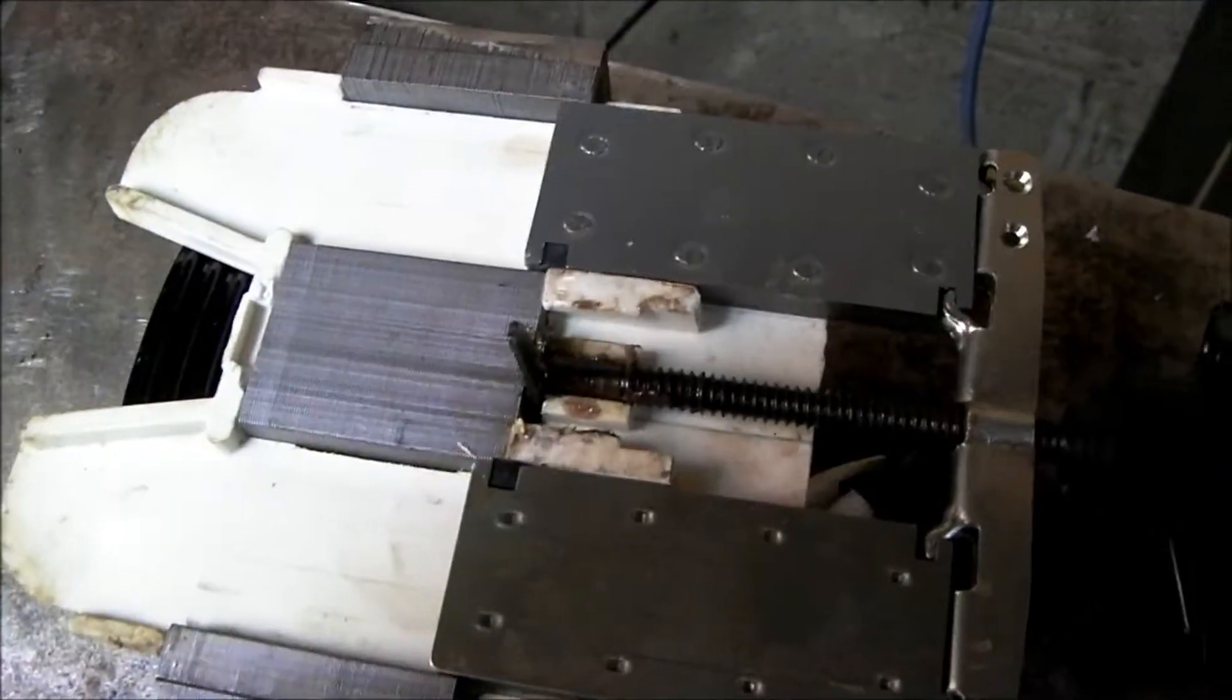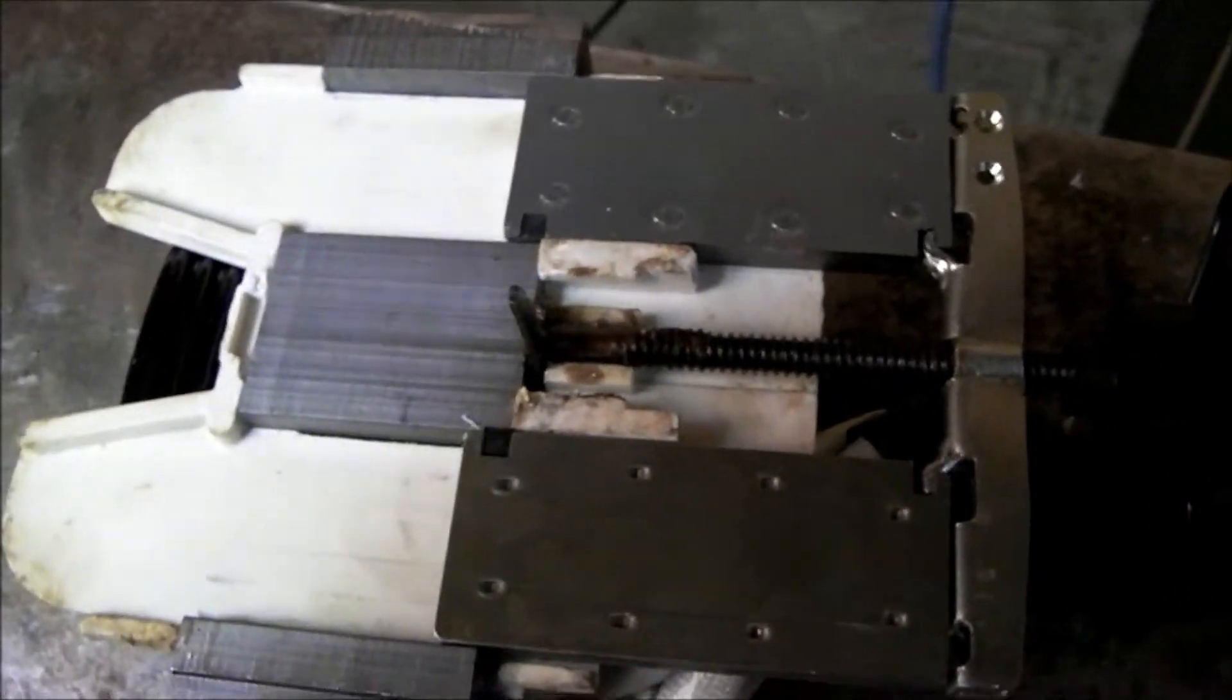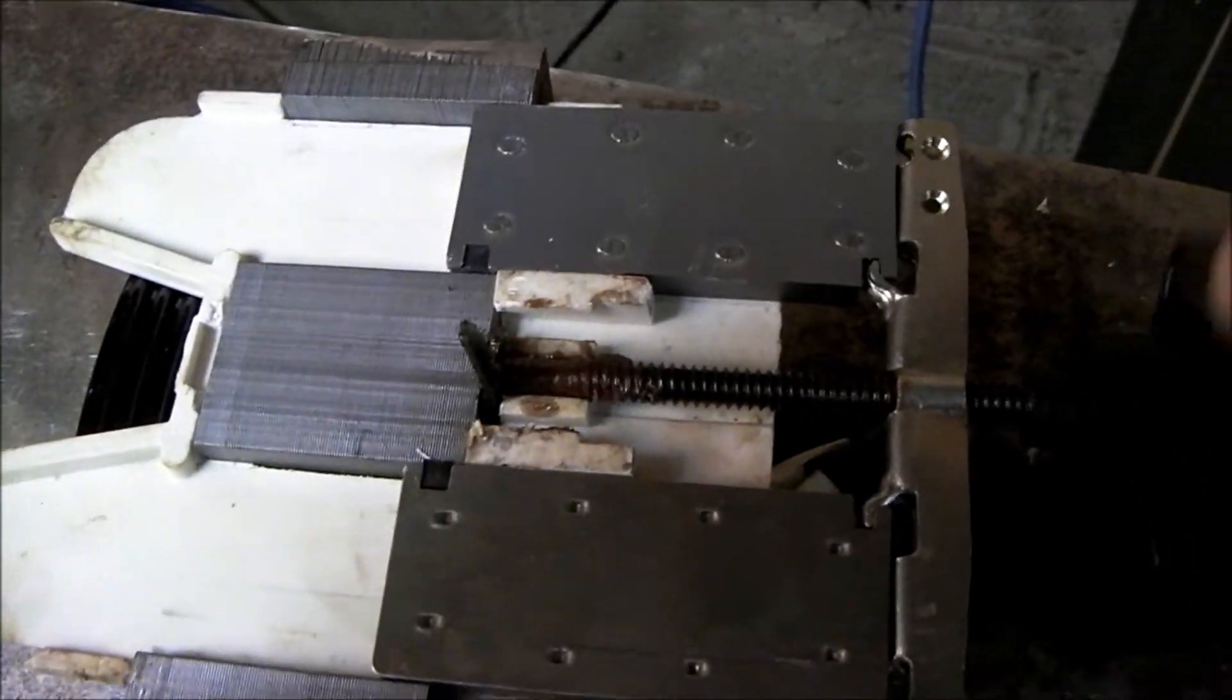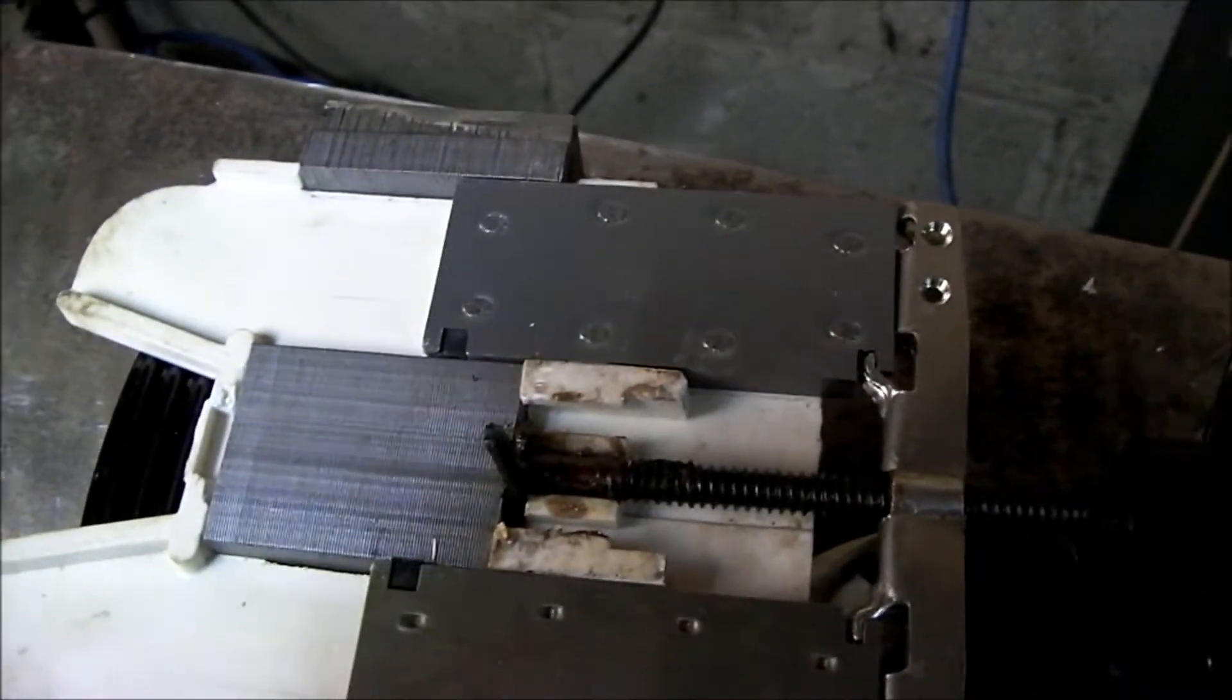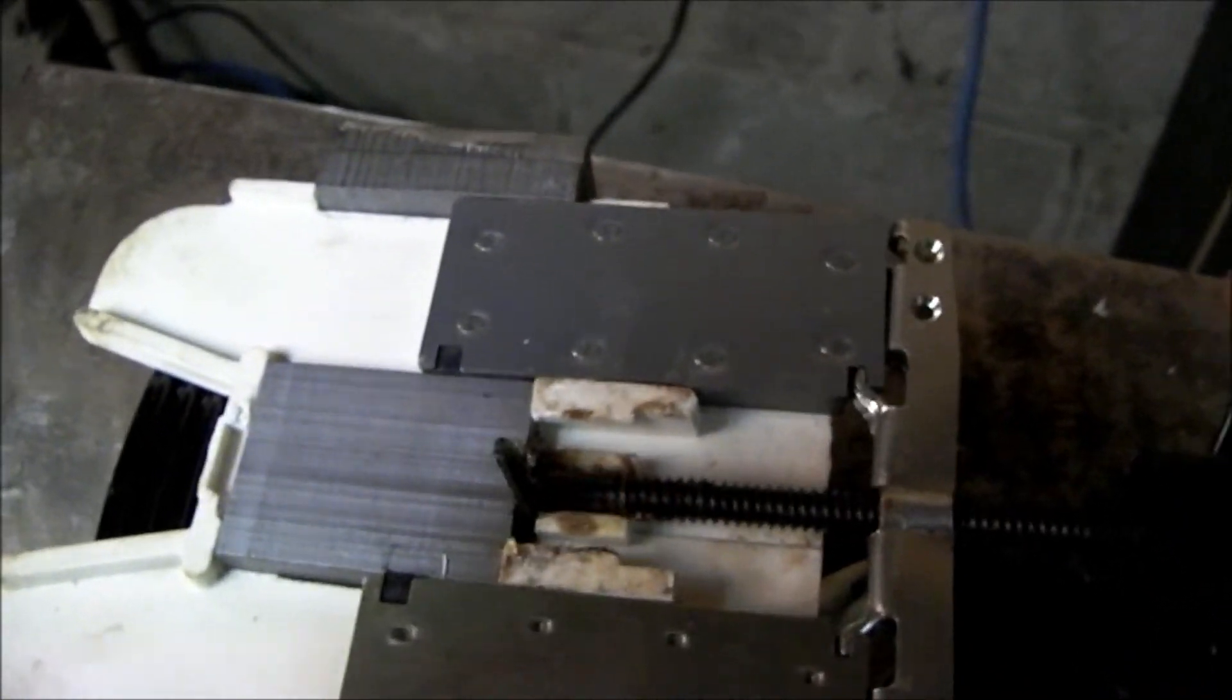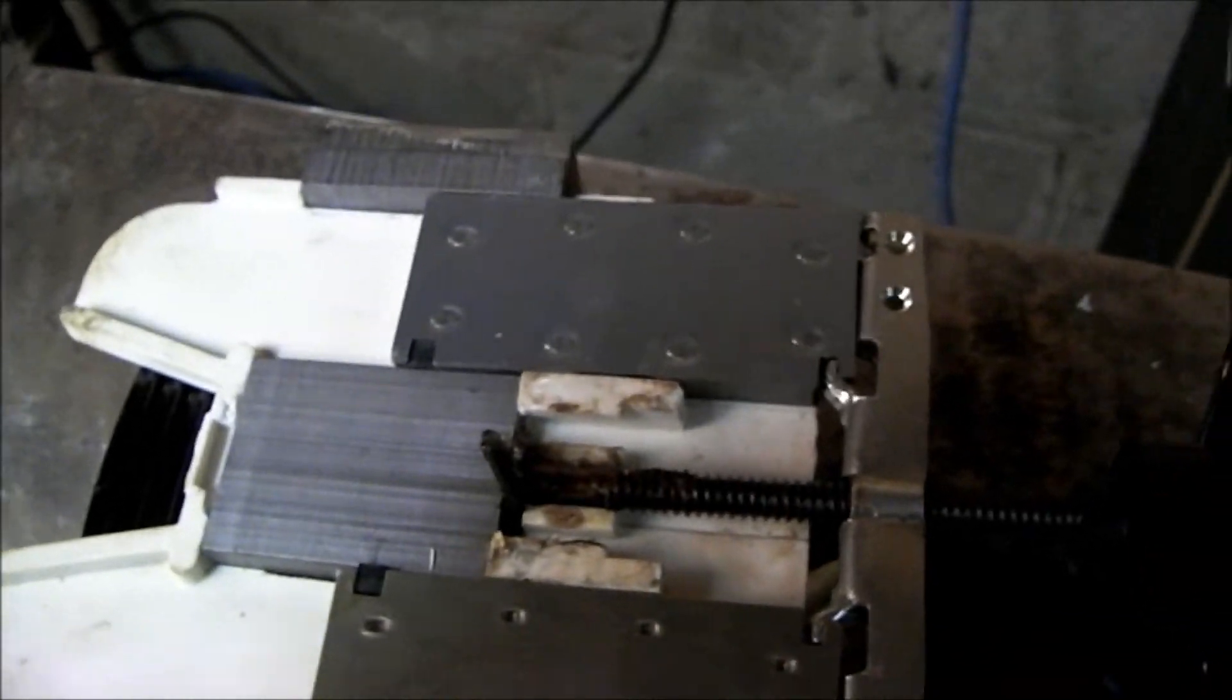When you screw all the way back in, that will give you the lowest amperage. And that's how these magnetic shunts work - they just interfere with the magnetic field between the two windings.